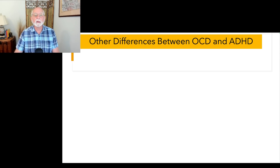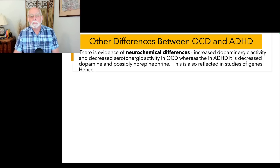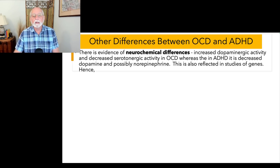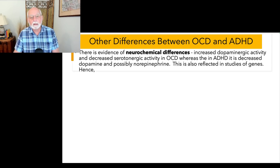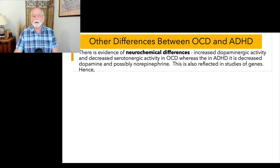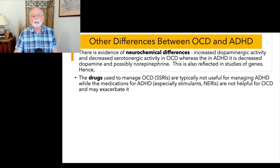Let's look at some other differences. Neurochemically they're different: we find increased dopaminergic activity and decreased serotonergic activity in OCD, whereas in ADHD it's the opposite for dopamine — decreased dopaminergic activity and possibly decreased activity of norepinephrine. These neurochemical differences are also reflected in genetic differences. Genes for serotonergic and glutaminergic activity seem to track more with OCD, whereas genes for dopamine and norepinephrine activity track with ADHD.